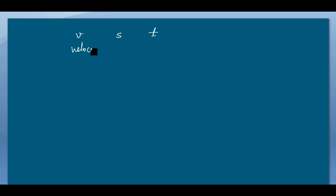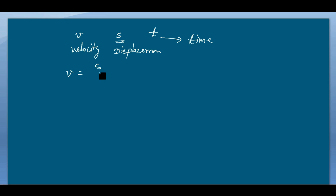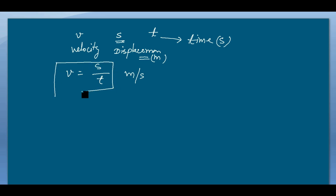The formula of velocity: if v is the velocity, s is the displacement covered, and t is the time taken, then the formula is v equals s divided by t. If displacement is in meters and time in seconds, then the unit is meters per second.